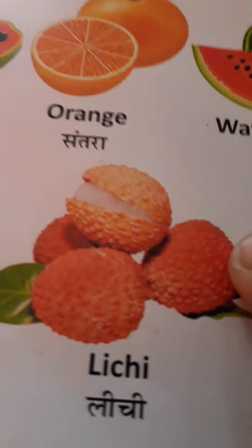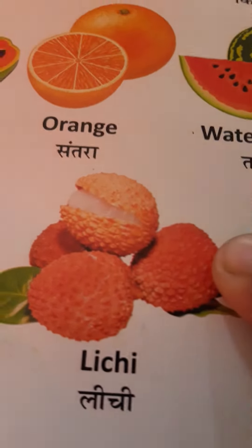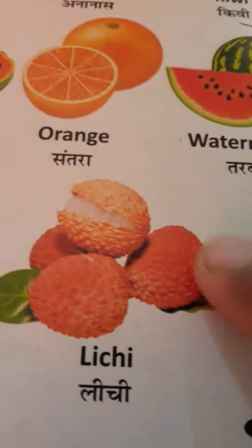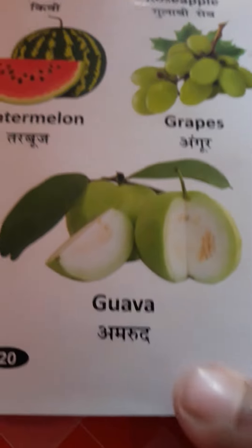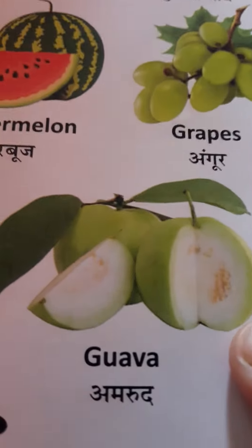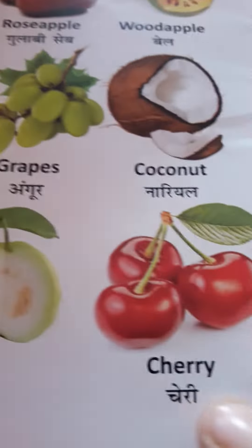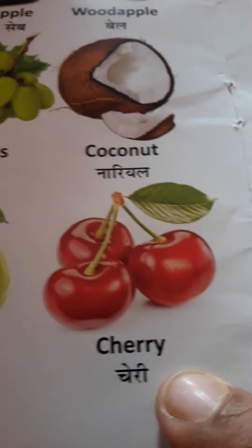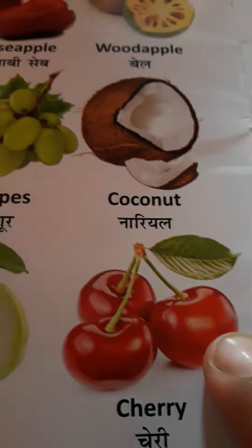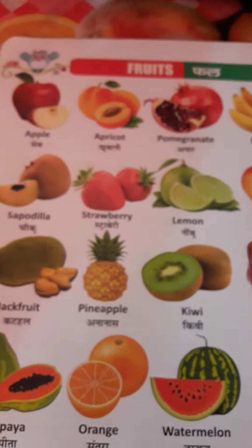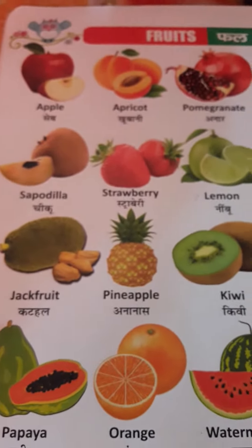Musc melon means kharbuj. Lichy means lichy. Mujapparpur lichy ke liye maschur hai. Guava means amrut. Cherry means cherry. Is tarike se hum logon ne itne falon ke naam ko padhna seekha. Agli kari mein hum iske spelling ko seekhenge.